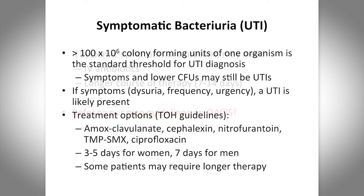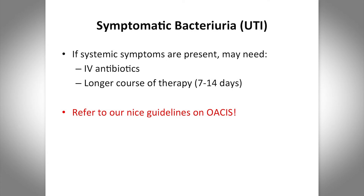If systemic symptoms are present — fever, rigors — or if you think there's pyelonephritis, which may be indicated by imaging or abdominal or flank pain, you may need to start intravenous antibiotics and may need a longer course of therapy, depending on whether you're treating a man or a woman and what antibiotic you're using. I would suggest you go on OASIS and look at the pathways we have, as those will fit 90% of patients we're treating.